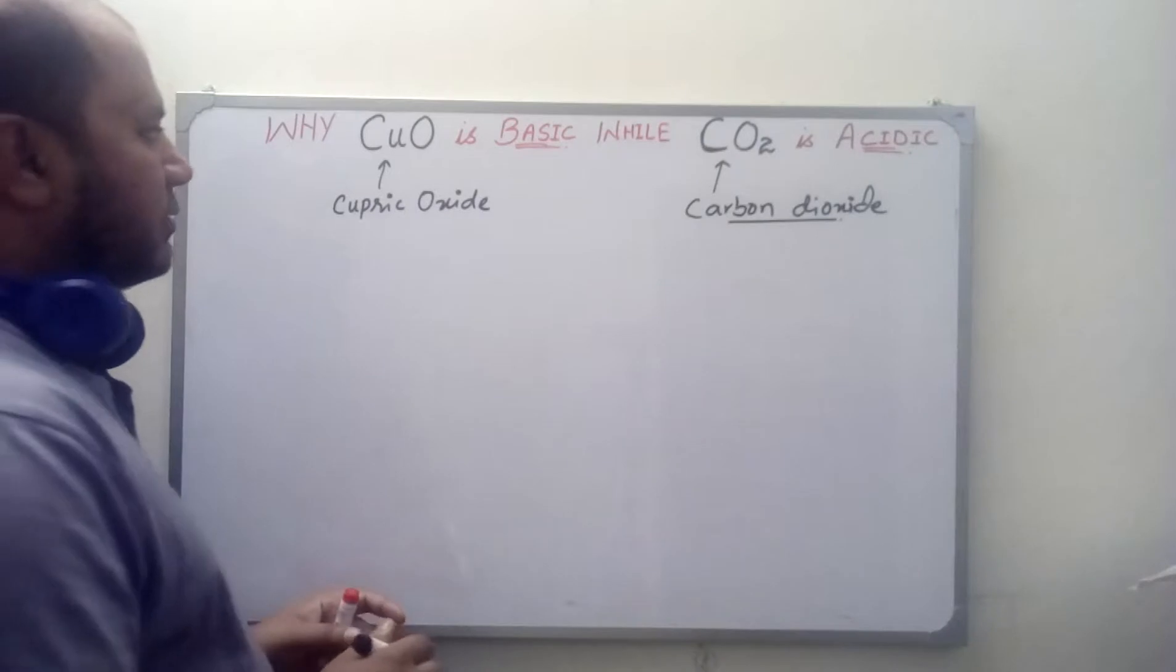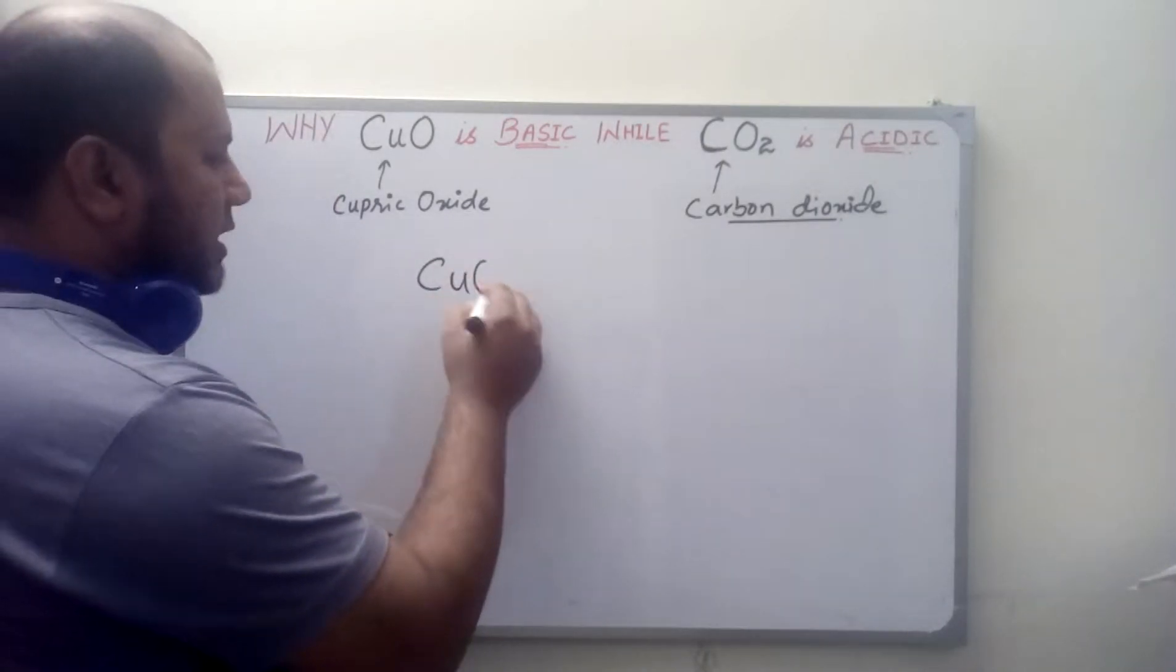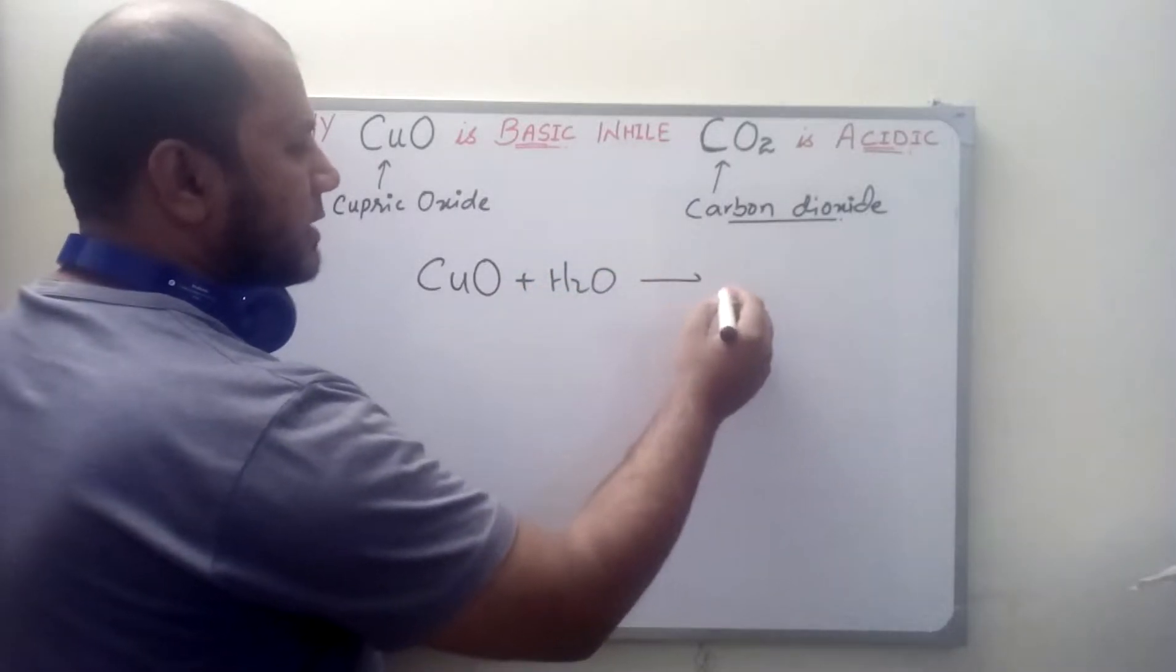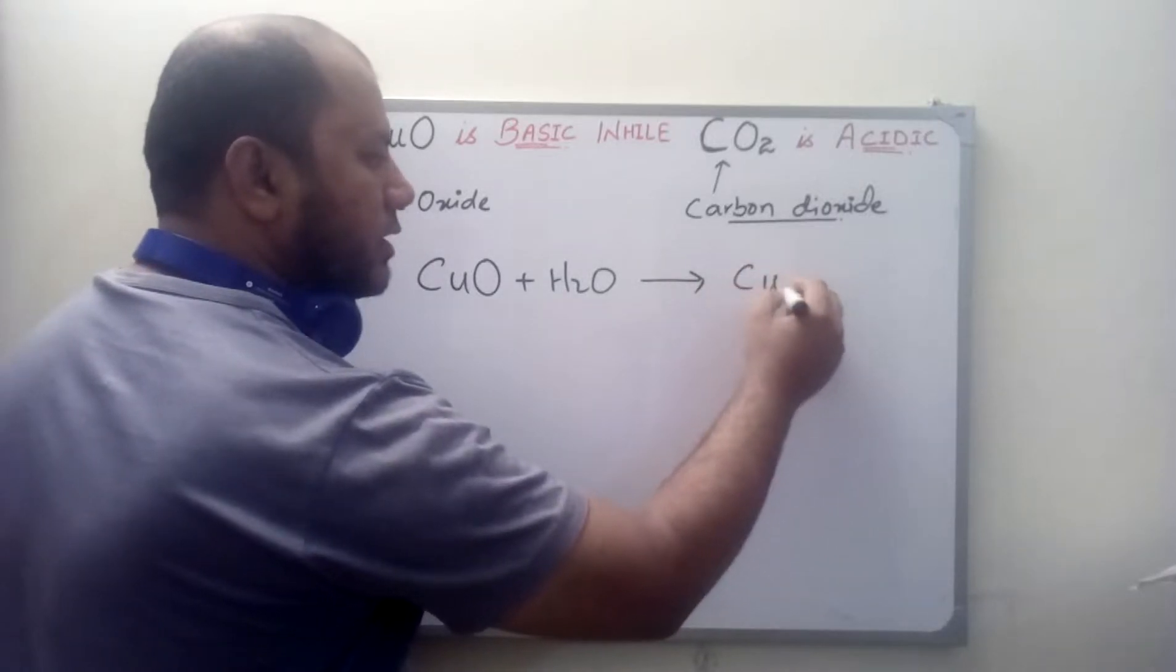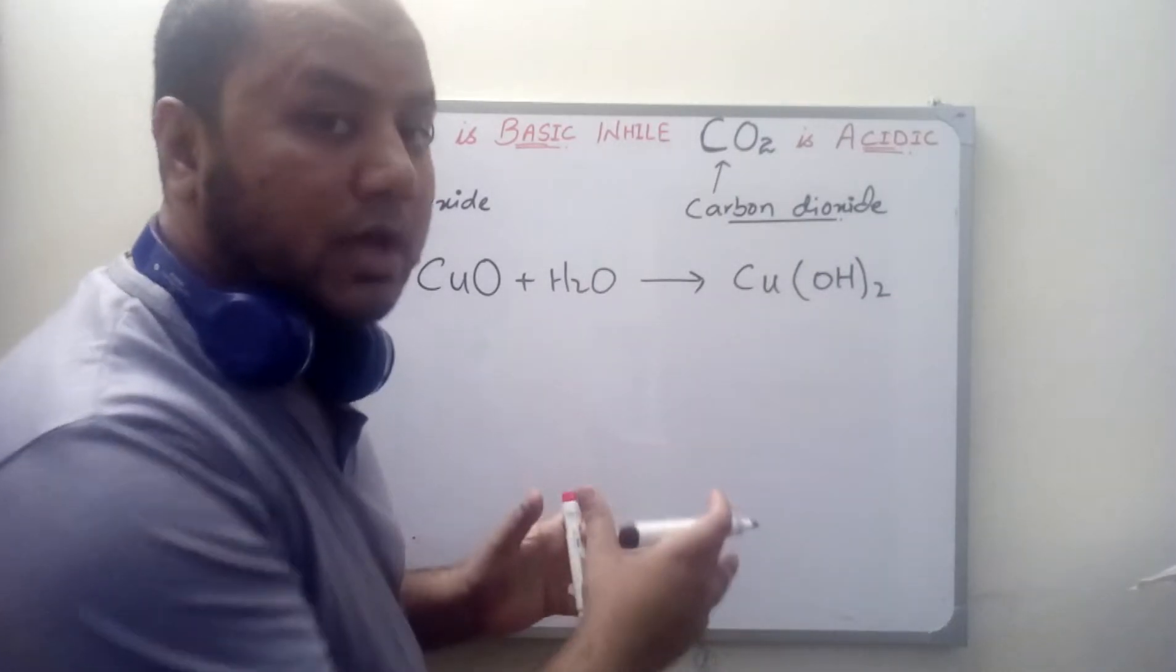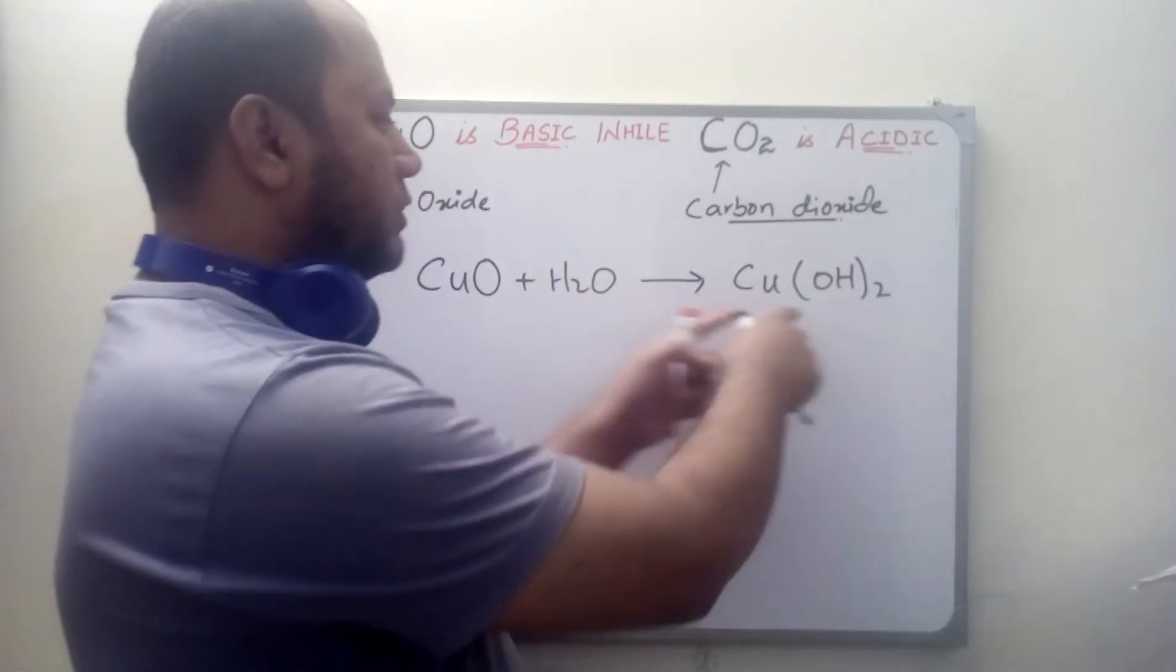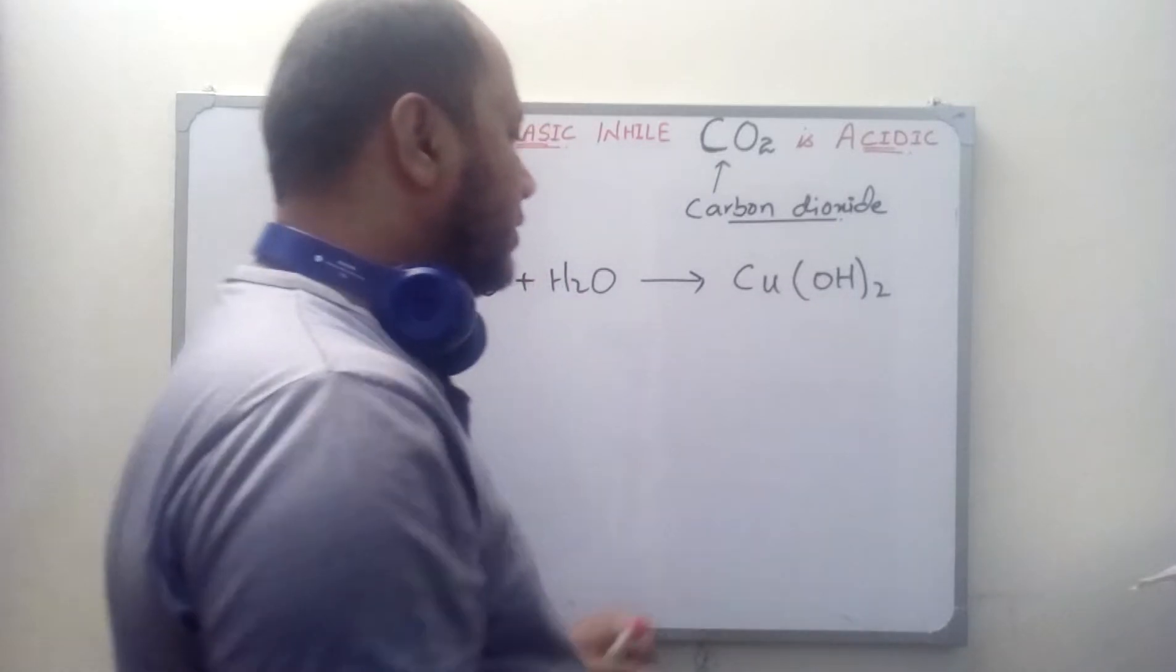I would like to explain in this way: when you add cupric oxide in water you get copper hydroxide. So when you add this salt in water, it is converted into copper hydroxide.